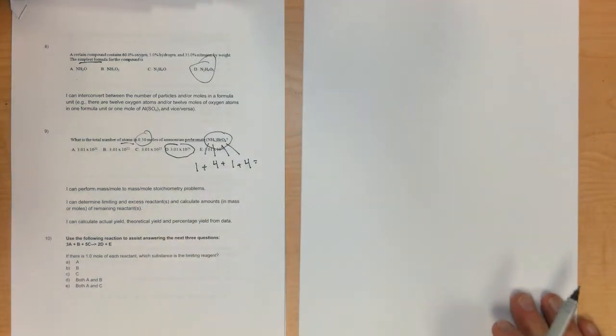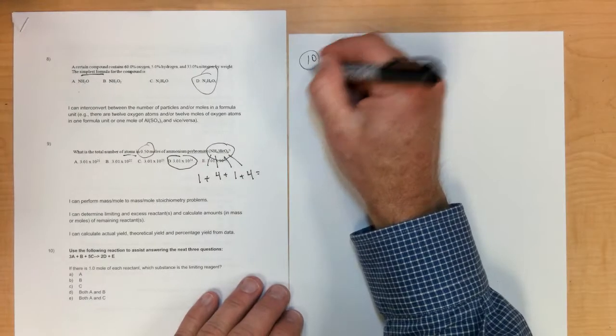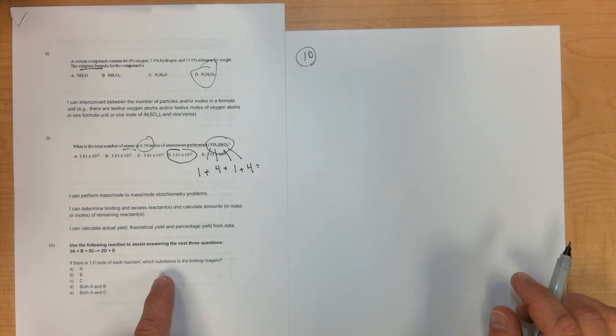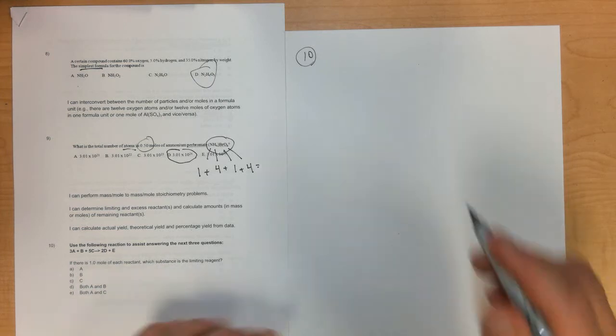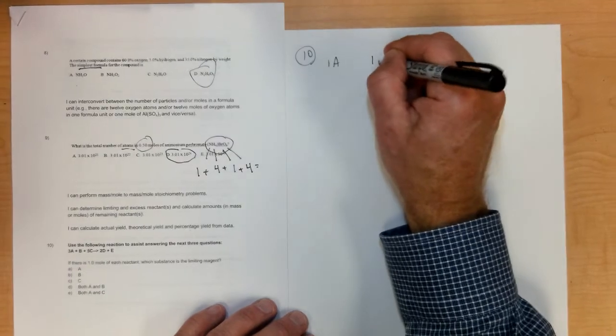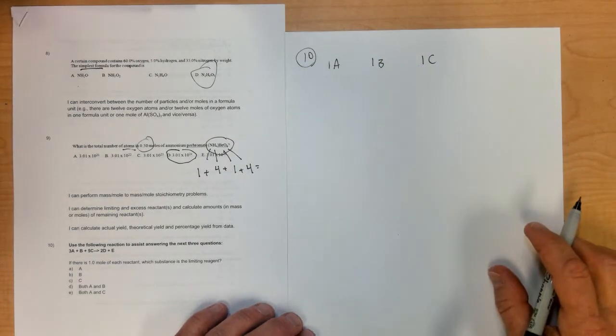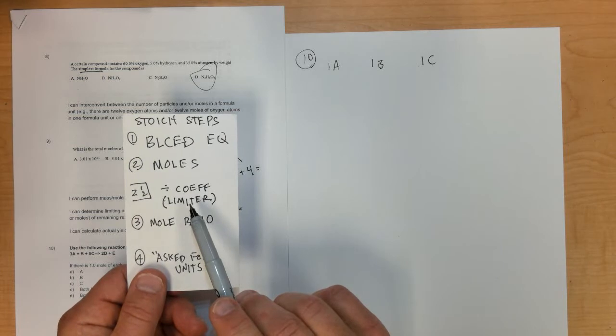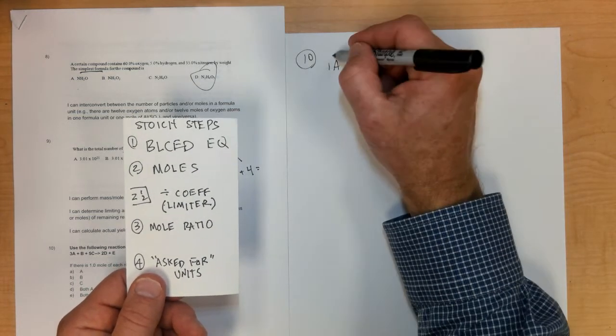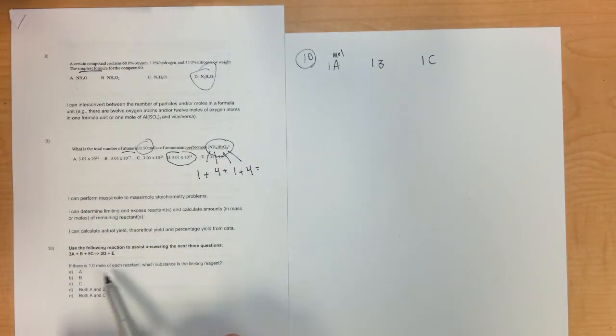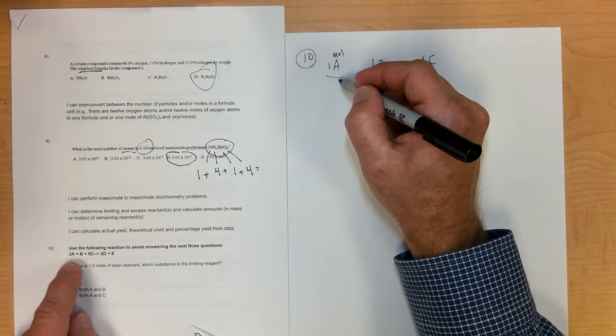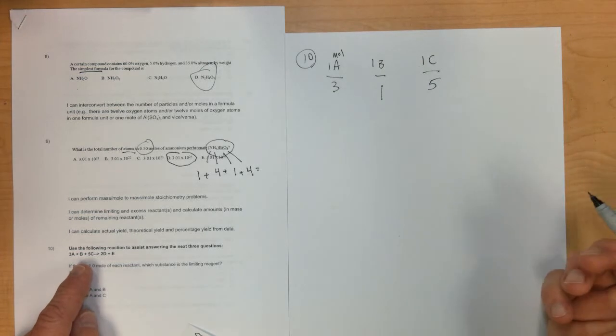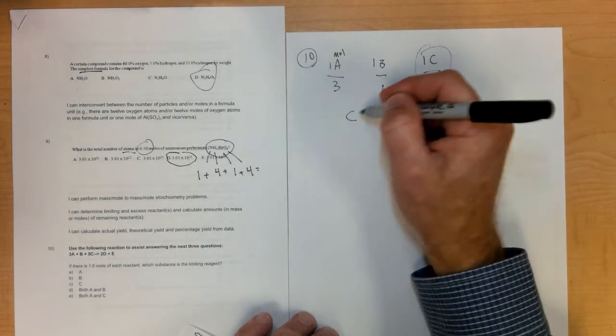One more, then we'll take a break. Number 10: use the following equation to answer the next three questions. If there's one mole for each reactant, which is the limiting reagent? If I have one mole of A, one mole of B, and one mole of C, how do I determine the limiter? Step 2.5 helps you determine the limiter. You divide by the coefficient. Since I have one mole of each, I divide by 3, by 1, and by 5. Which is smallest? One-fifth is smallest, so C is the limiter.